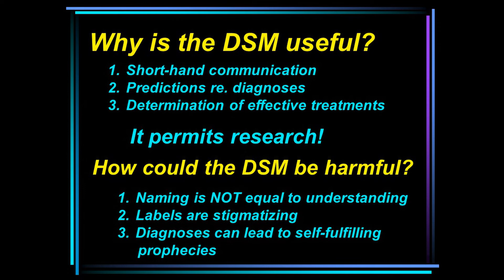Diagnoses can also lead to self-fulfilling prophecies. If someone is diagnosed with a psychiatric disorder, other people see that person through the filter of the diagnosis, which influences the person's behavior. It may also be that the individual's own perception of their diagnosis affects their behavior. We don't know the exact means by which this occurs, but experts who use the DSM and provide psychotherapy say they are very careful and well aware of the potential for harm in using psychiatric diagnoses.